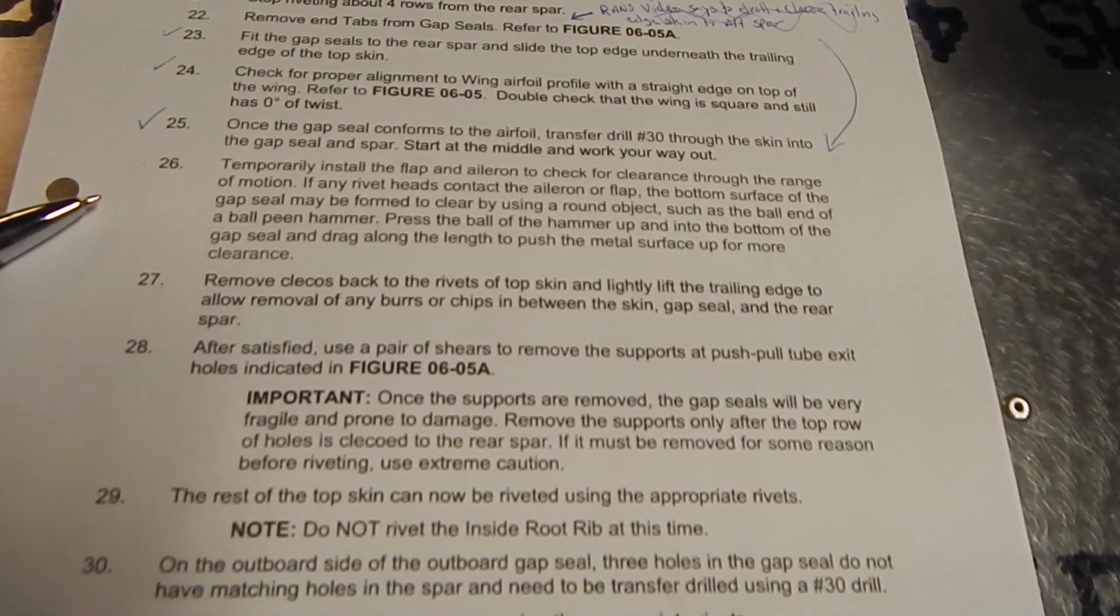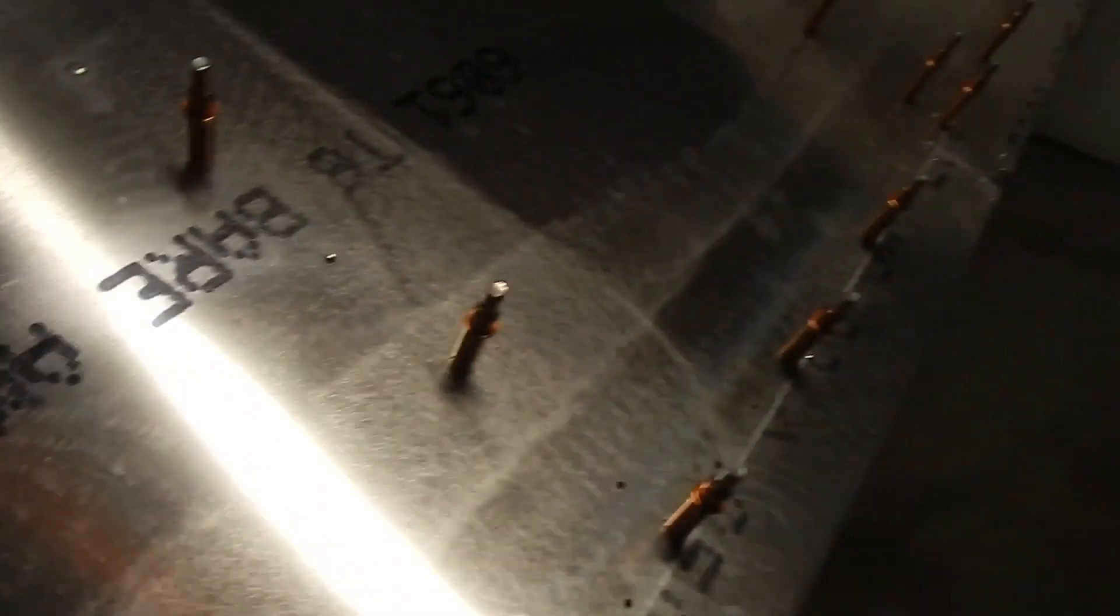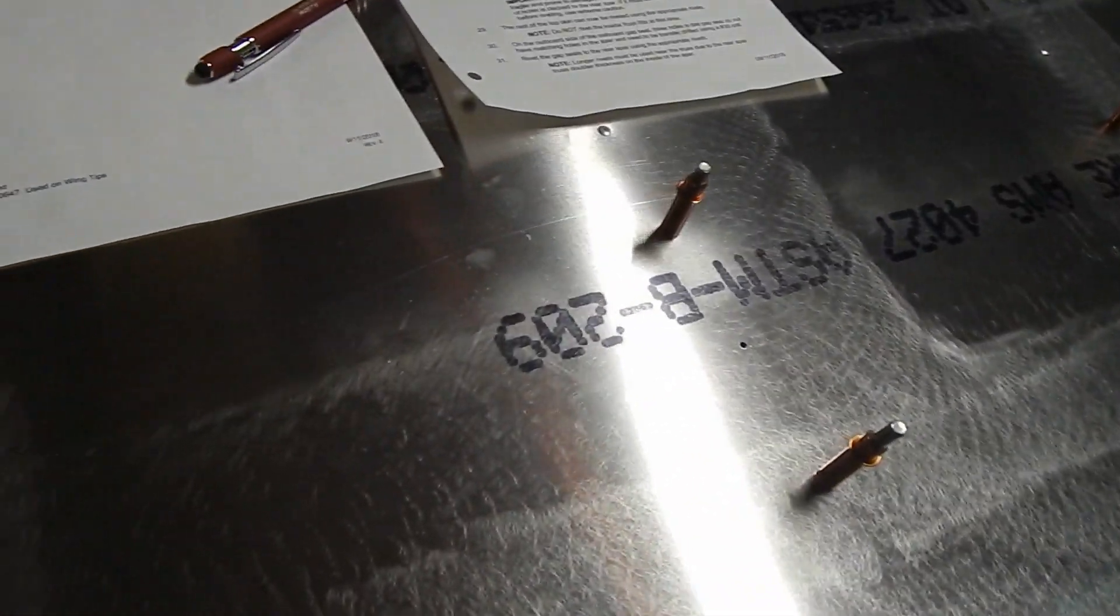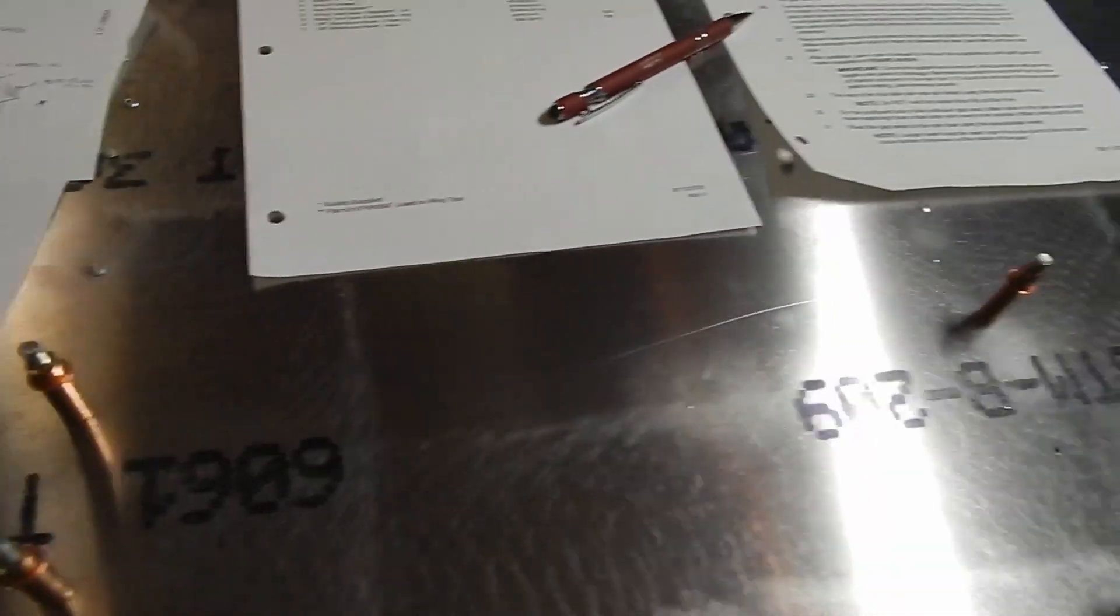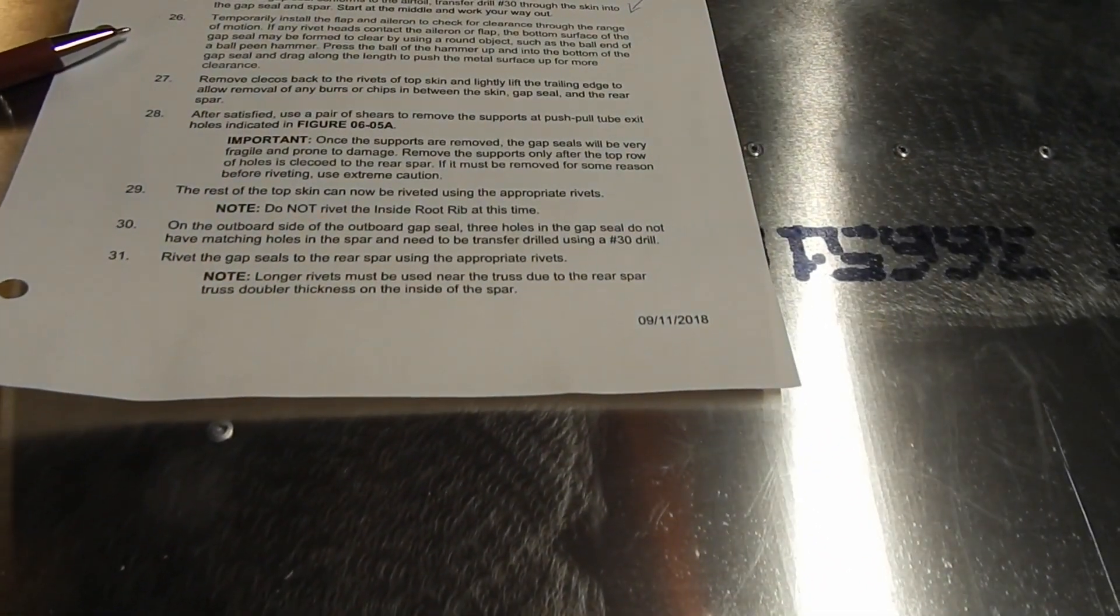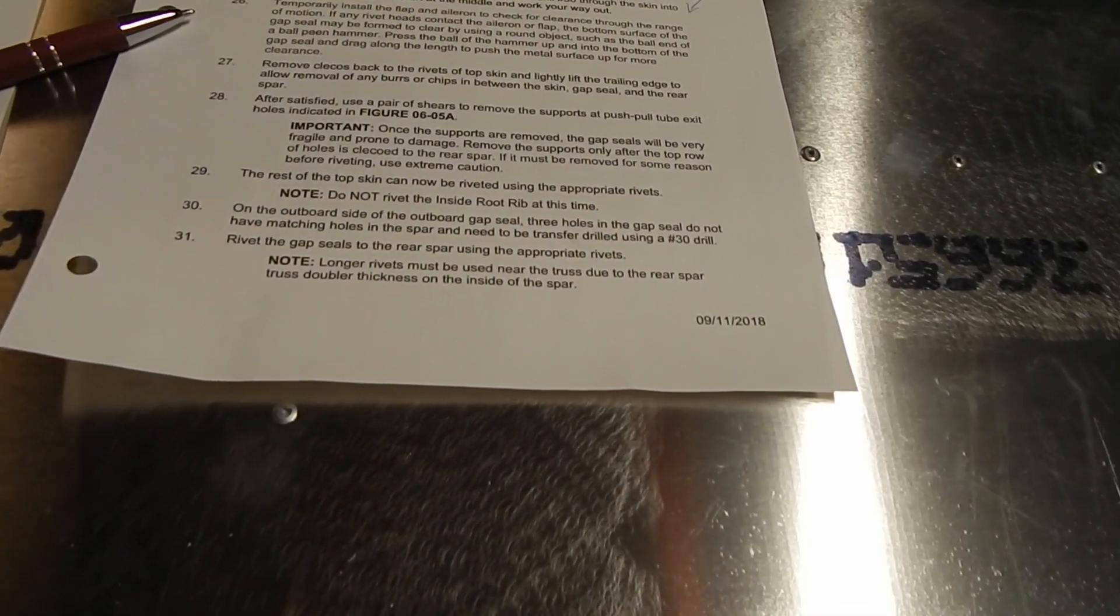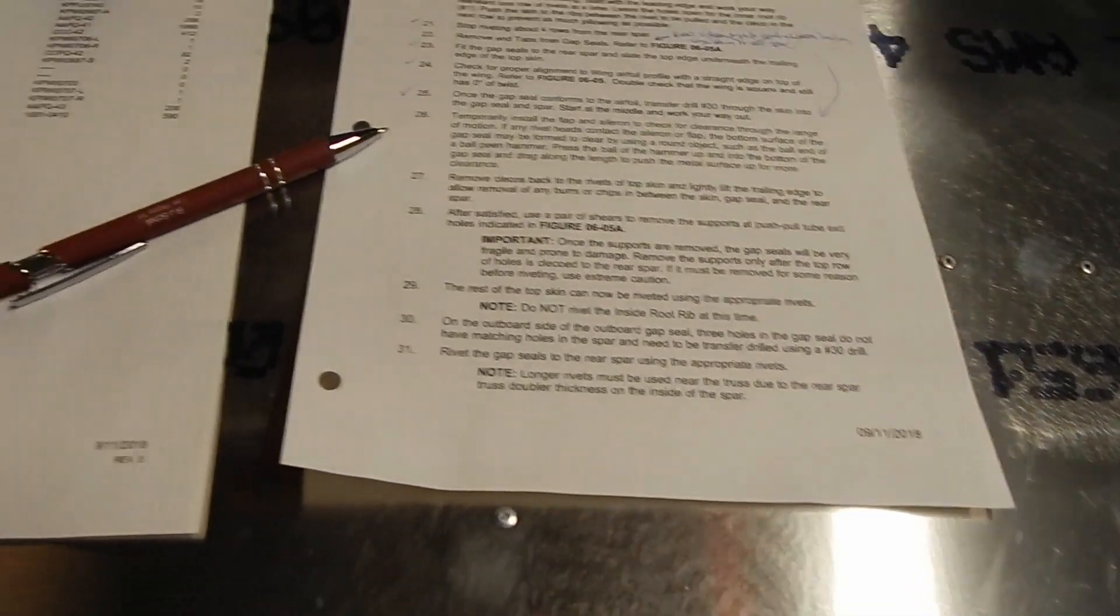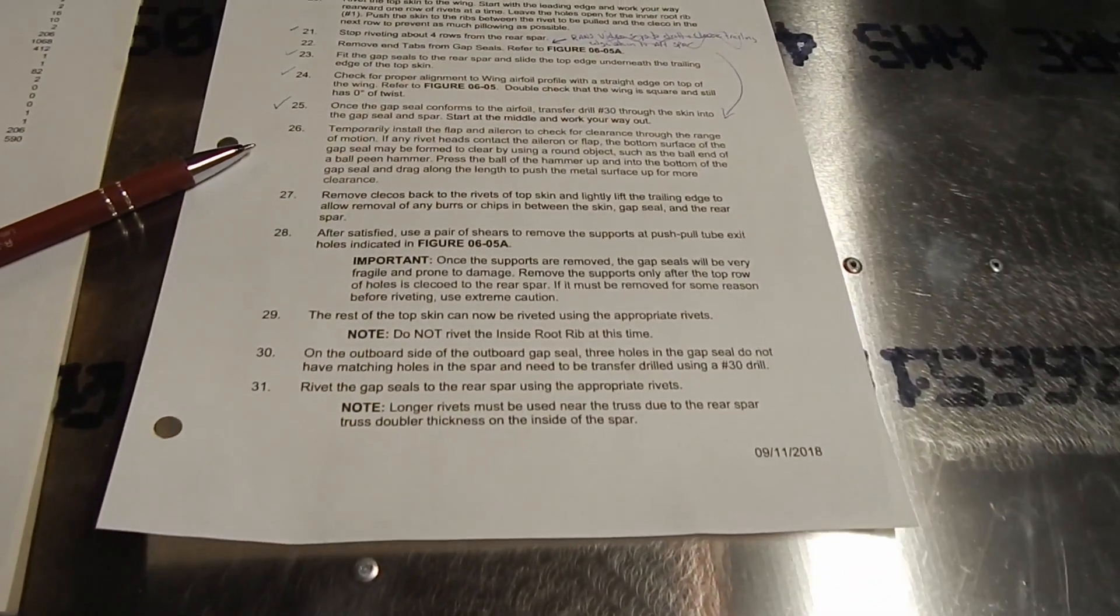Well, I haven't built the flap or aileron, so I guess before I go any further on the wing, I'm gonna put this aside and I'm gonna put the flap and aileron together. I think the video on that's gonna be pretty short because it's two small wing surfaces, and we've done a lot of those with the tail feathers. I don't think there'll be any new learning skills on the flap and aileron.